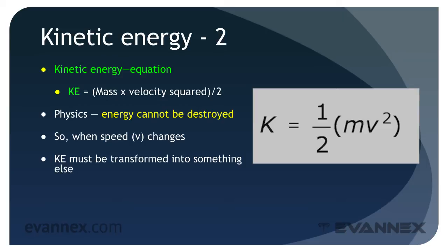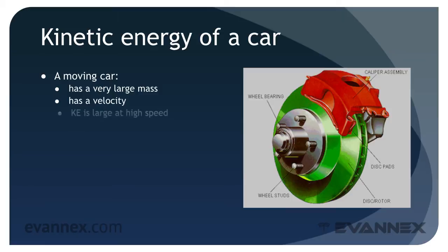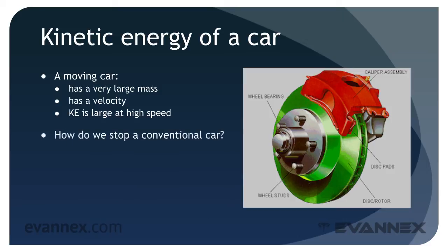But enough abstractions — let's talk about a moving car. A moving car is a large object traveling at a given speed. It has a very large mass and can have significant velocity, so its kinetic energy is impressive. Any unfortunate soul who has backed into a roadside mailbox understands this from personal experience. How do we stop a conventional car? As the car slows, its kinetic energy must be transformed into something else — another form of energy.